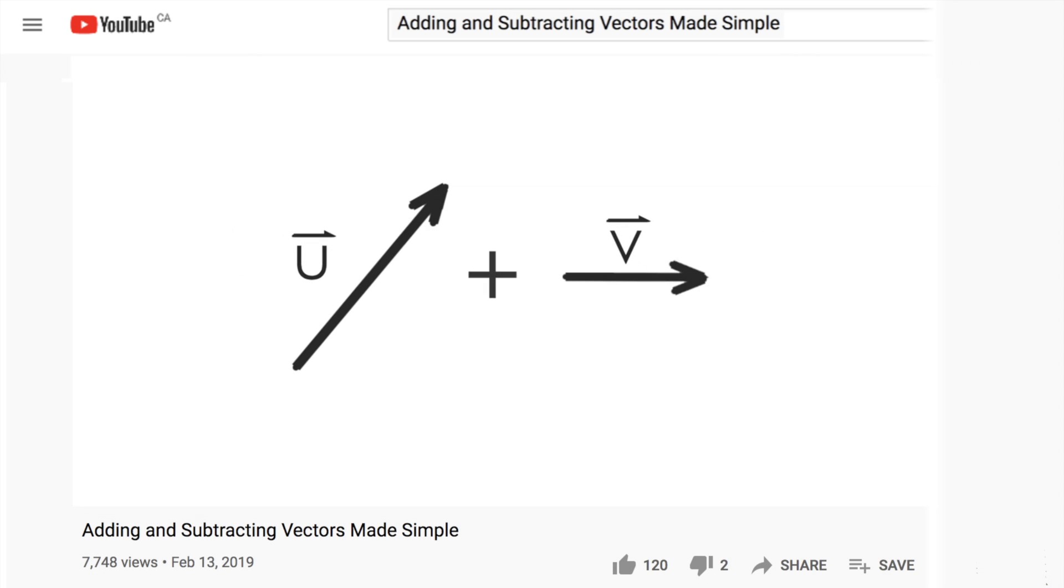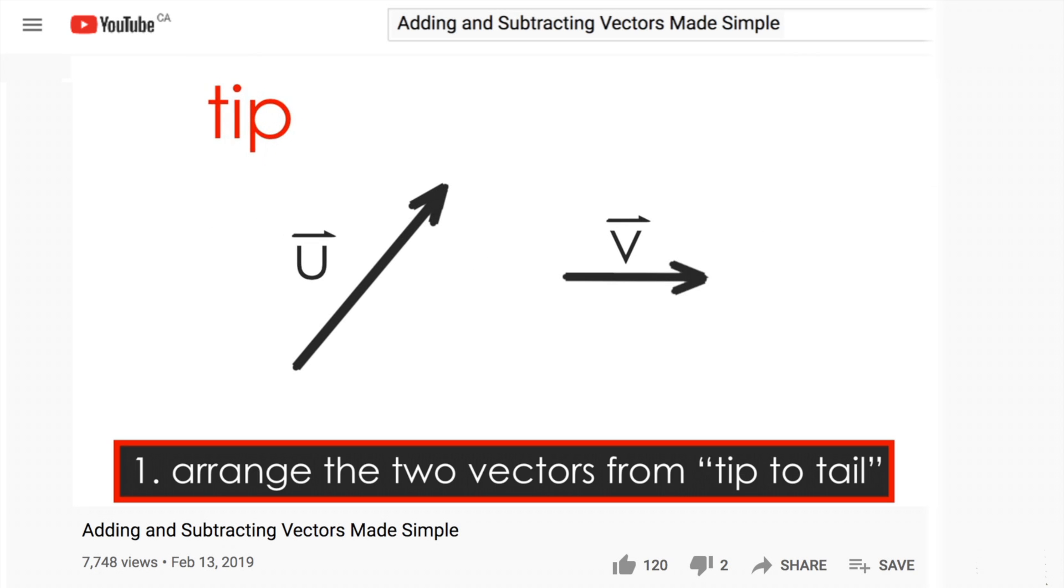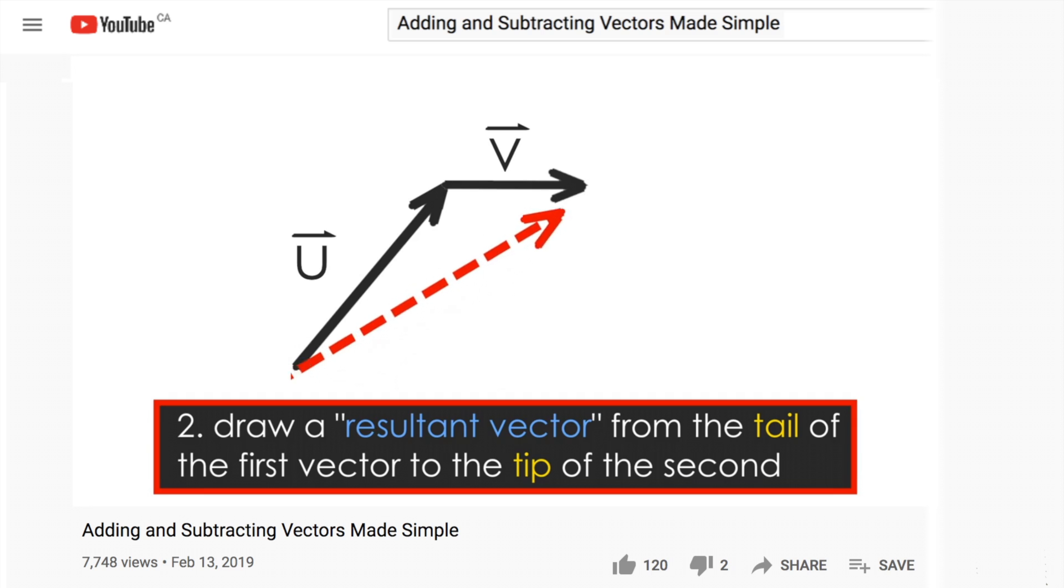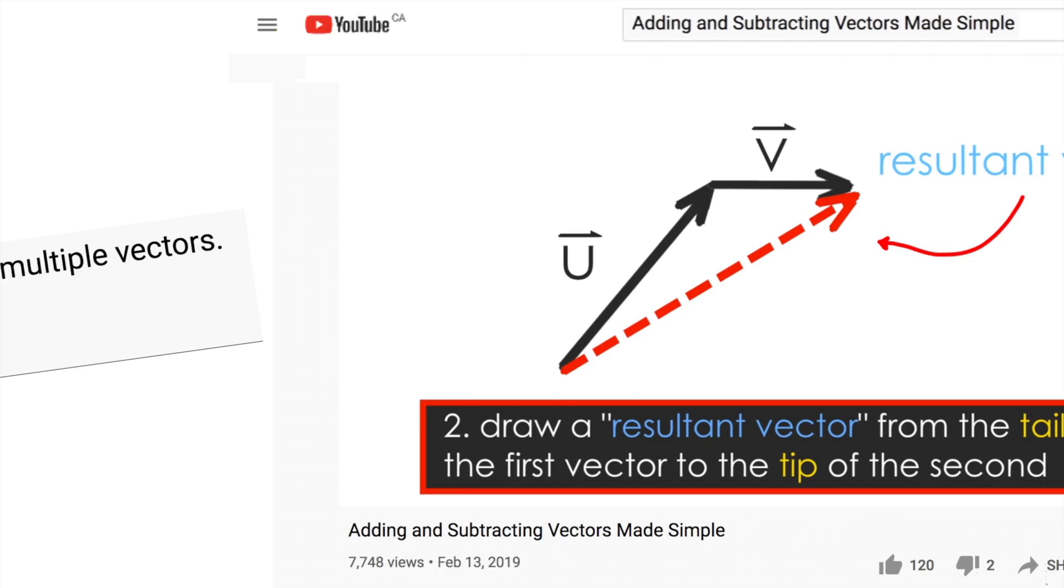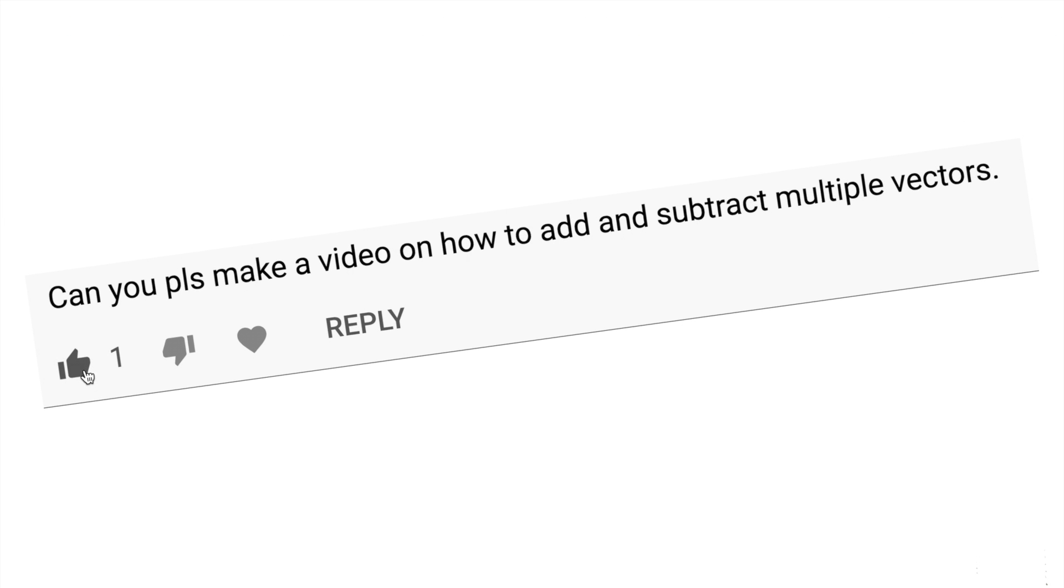In a previous video, I showed you how adding and subtracting two vectors can be made simple by using the tip-to-tail method, arranging two vectors from the tip of one to the tail of the other, and drawing the resultant vector. But what happens when you add and subtract multiple vectors?